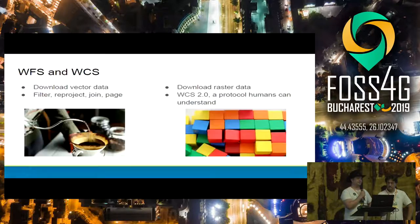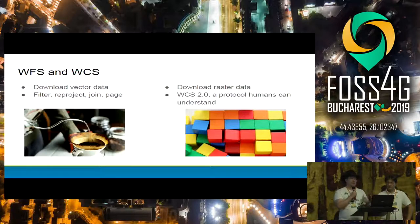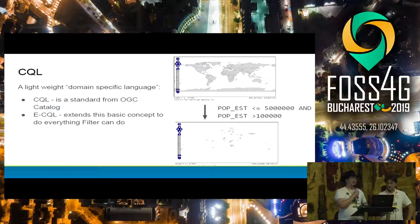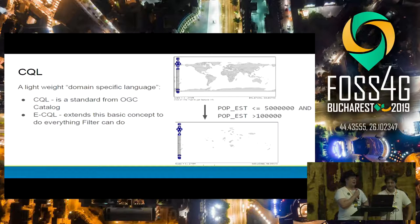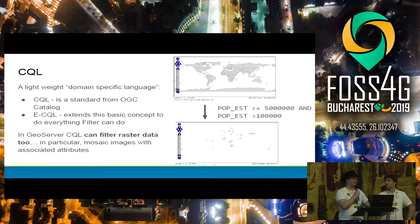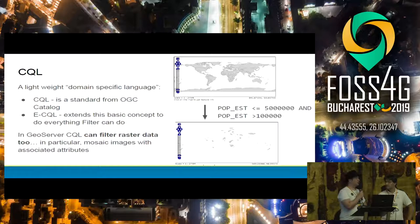In terms of delivering data, WFS and WCS are two protocols for direct access to data — WFS for vector data and WCS for raster data. CQL, the constraint query language, is a lightweight filter language so you don't have to use XML. eCQL is our own extension that makes it a little easier to use. In GeoServer, CQL can also be used to filter raster data, particularly to decide which tiles in your mosaic you want to display.